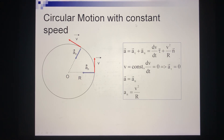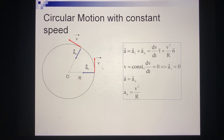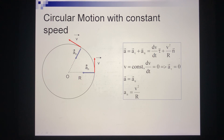If we consider circular motion with constant speed, the magnitude of velocity is constant. When we take the derivative of velocity with respect to time, we get zero, meaning the tangential acceleration is zero. Because the object must change direction to follow the circle, the normal acceleration is different from zero. Therefore, the total acceleration equals the normal acceleration, and tangential acceleration equals zero because the speed is constant.